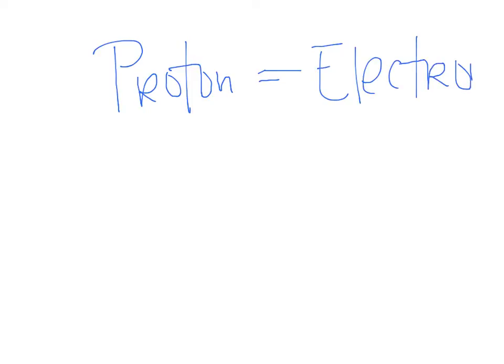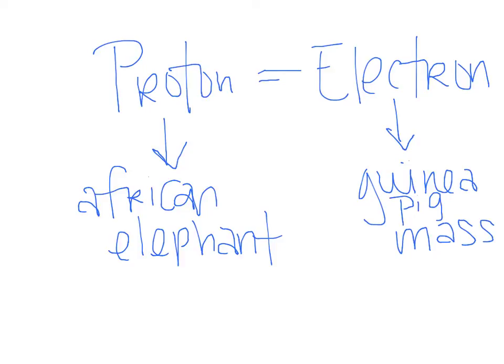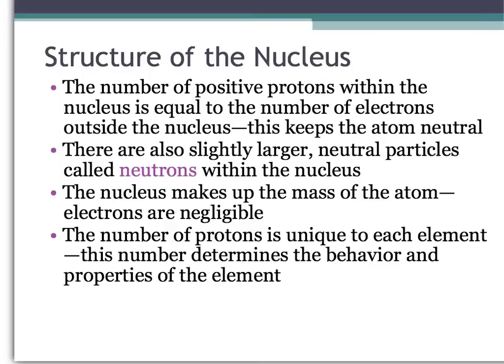The interesting thing about this is that when you compare a proton to an electron, in a real-life example, a proton weighs about as much as an African elephant would if an electron were the size of a guinea pig. That's the mass ratio. One electron is about as much as one guinea pig compared to a proton, which would weigh about as much as one African elephant. That's a huge disparity.